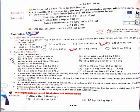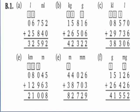Now start B part — solve the following. First question: add the following. A part is 6 liter 752 milliliter, and add karna hai 25 liter 840 milliliter. Firstly arrange karenge liter aur milliliter mein. Then plus karenge: 2 plus 0 is 2, 5 plus 4 is 9, 7 plus 8 is 15 — so 5 niche and 1 carry karenge. 1 plus 6 plus 5 is 12 — 2 niche and 1 carry karenge. 1 plus 2 is 3. So our answer is 32 liter 592 milliliter.